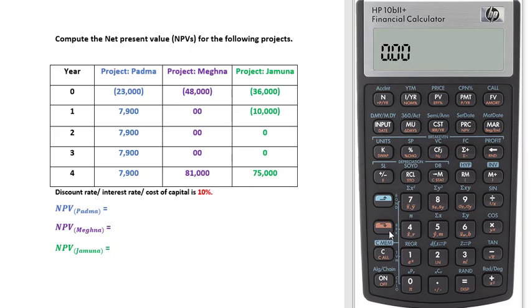To clear memory, press the orange Shift button, then C or Clear All. Your memory has now been cleared.